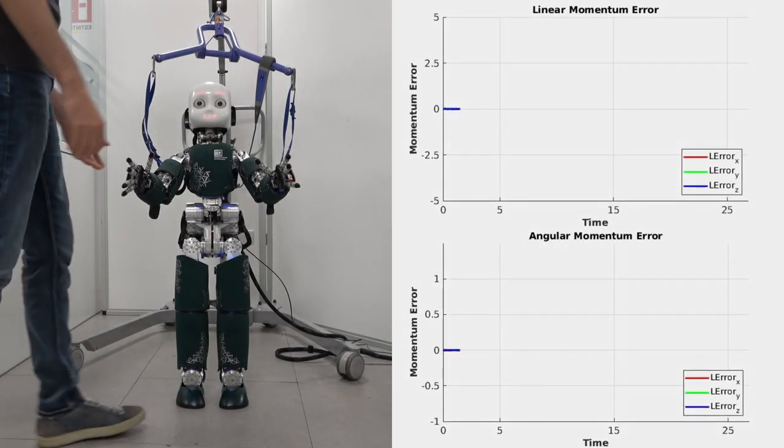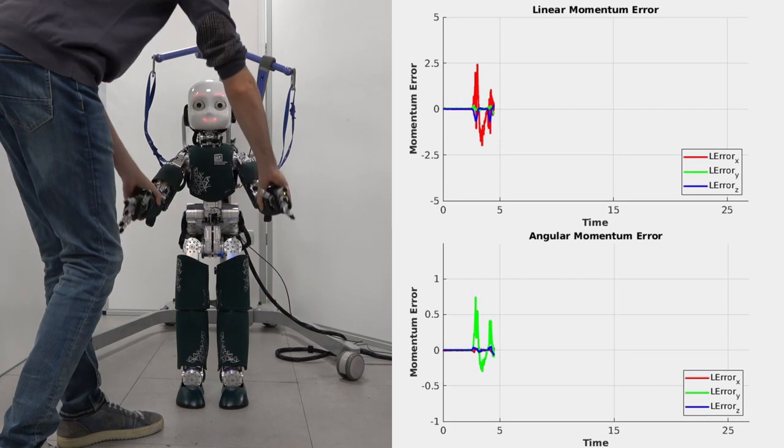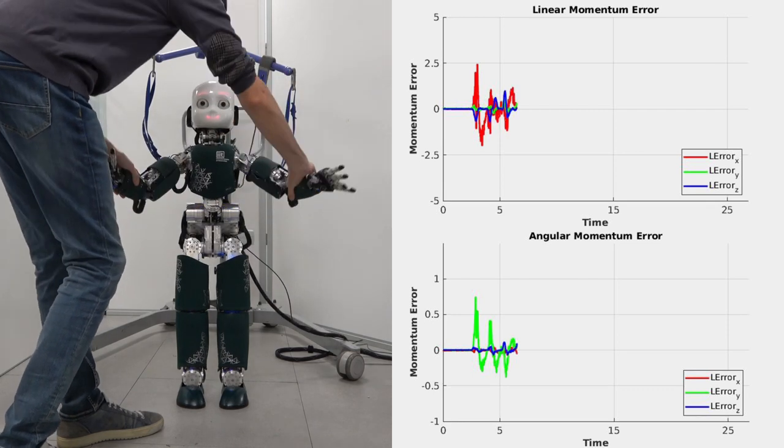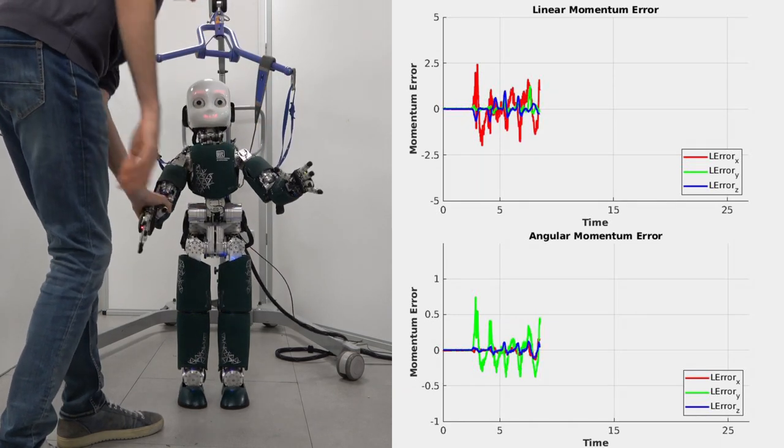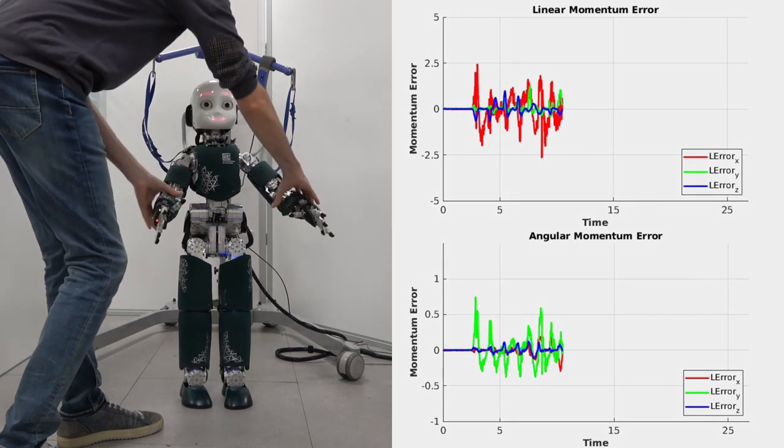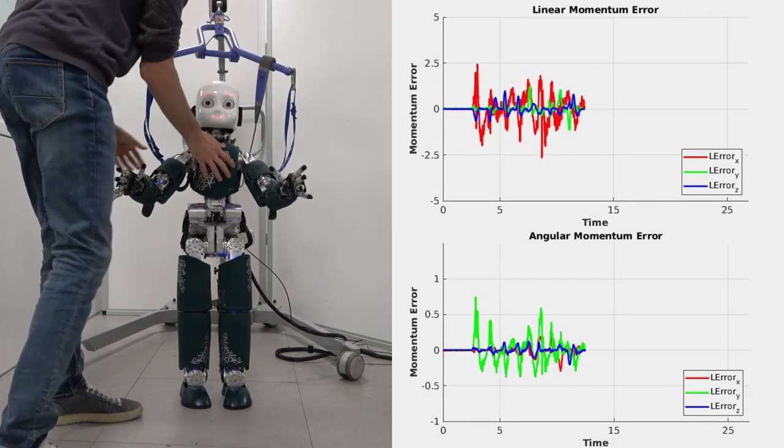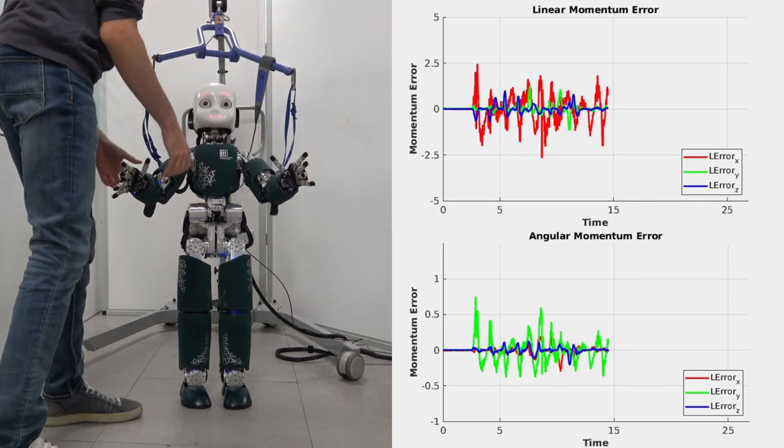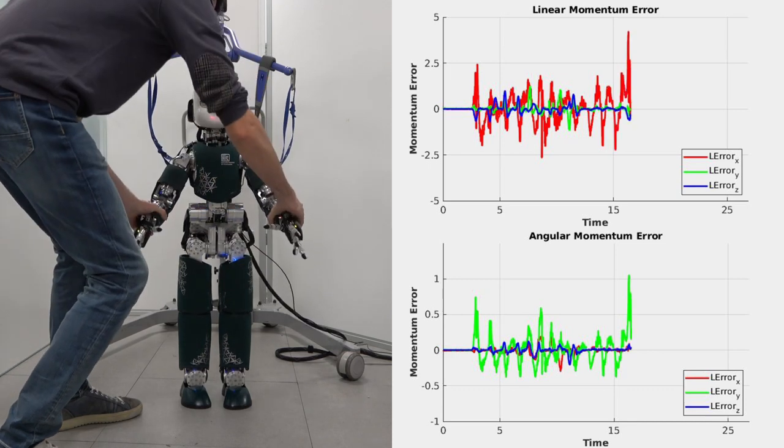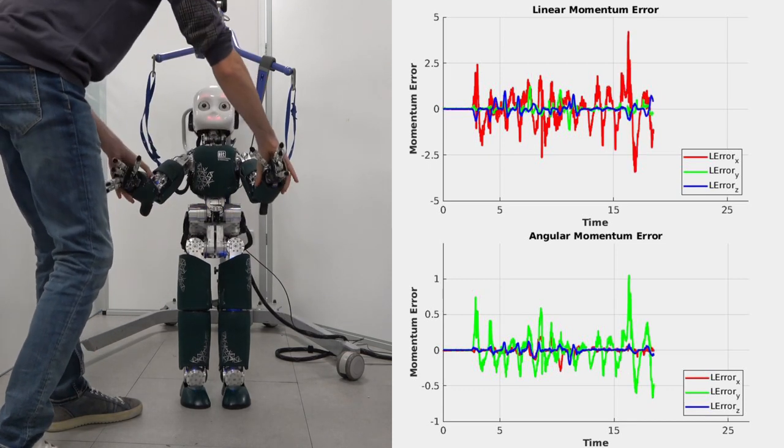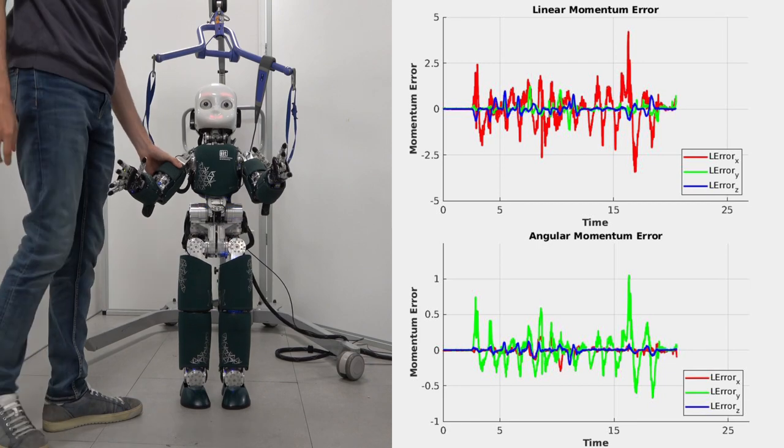We validated our control architecture on the robot iCub. In this experiment, the robot is balancing while a person applies external unmodeled disturbances. The human force is sensed by the force torque sensors, and the jerk controller is able to react and maintain a good tracking of the desired momentum thanks to the use of direct force feedback.